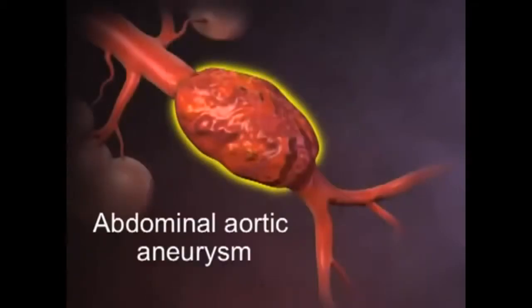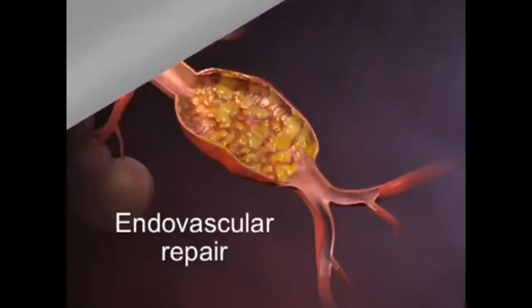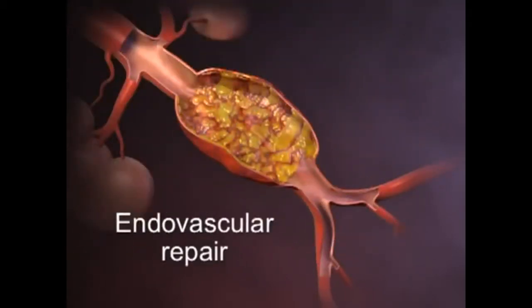The traditional approach to abdominal aortic aneurysm repair has been an open surgical procedure. Endovascular repair using an endovascular stent graft is a more recently developed approach.